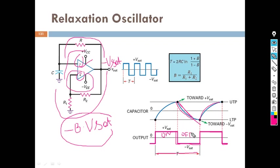So that is called T. There is a formula to find T: T is equal to 2RC·ln((1+B)/(1−B)). In the next slide, we will see the numerical example related to this.